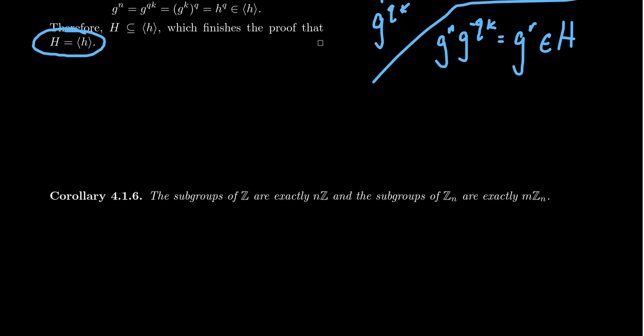And by similar reasoning, if we look at the cyclic subgroup Z_n, which we've already established, clearly mZ_n are cyclic subgroups. This is the subgroup generated by m. But the only subgroups of a cyclic group are cyclic subgroups. And therefore, these are the only subgroups of Z_n.